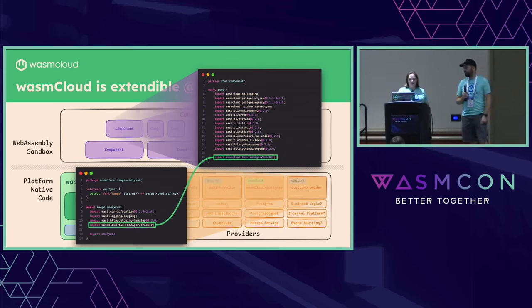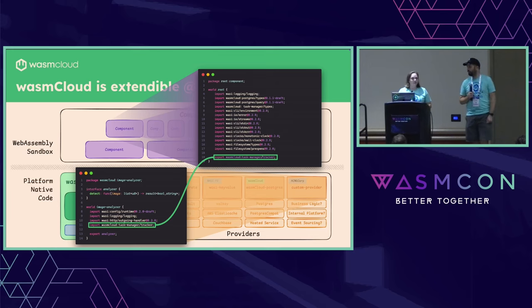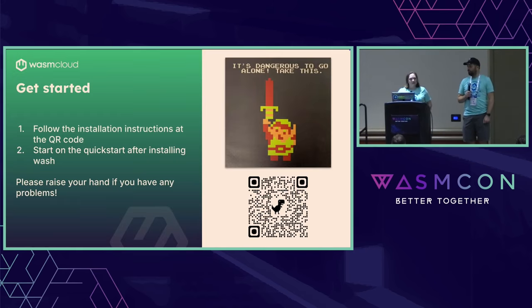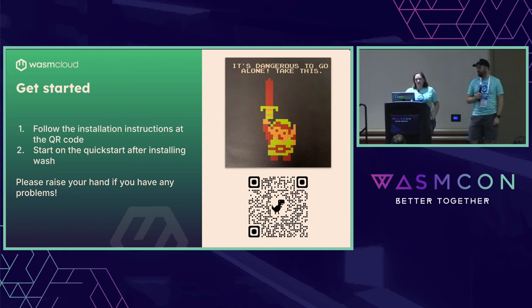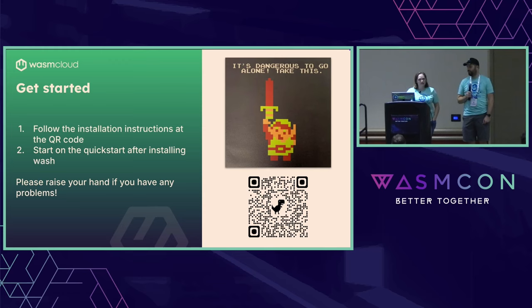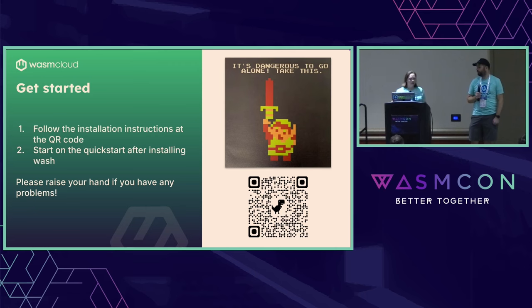That's exactly what this diagram is demonstrating — two components, where one needs an API so it imports it, and another component provides that API so it exports it. So let's get started — that's enough exposition.